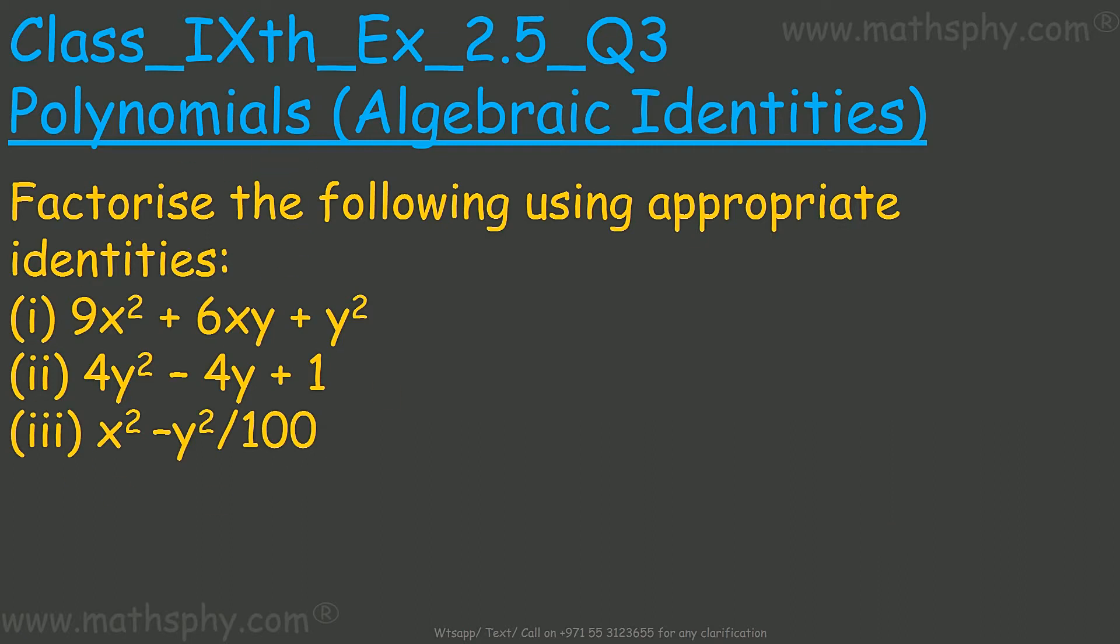These ones here: factorize the following using appropriate identities. We have to factorize using appropriate identities. Previously we were doing products, meaning multiplication. Here we have already multiplied, so we have to break this into the smallest possible factors.